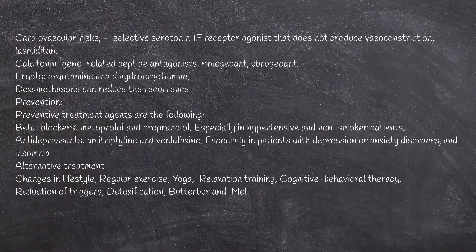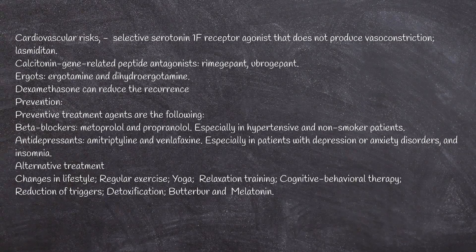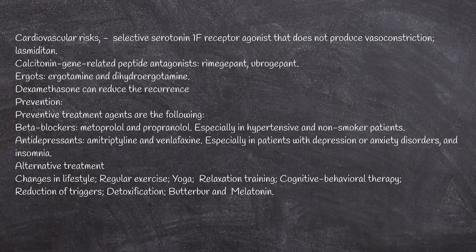Alternative treatments include changes in lifestyle, regular exercise, yoga, relaxation training, cognitive behavioral therapy, reduction of triggers, detoxification, butterbur, and melatonin. Regarding prognosis, migraine is a chronic condition that can revert to episodic migraine in 26 to 70% of patients. Prolonged remissions are common; however, some patients have a pattern of leaving and returning to chronic states. The severity and frequency of attacks can diminish with age.